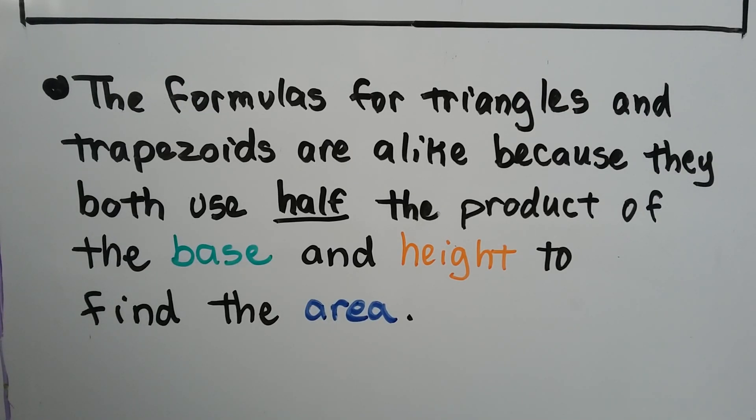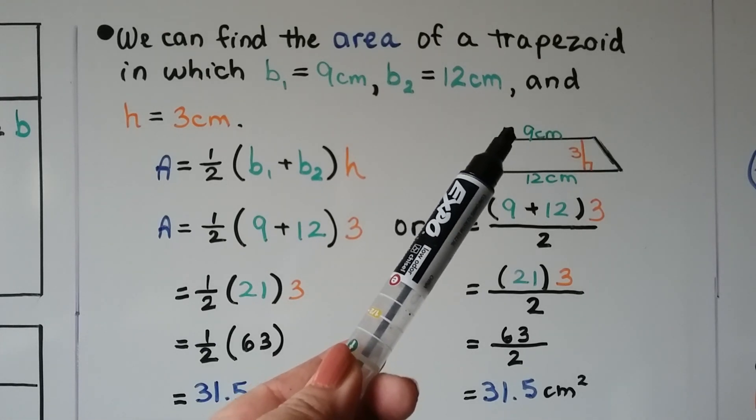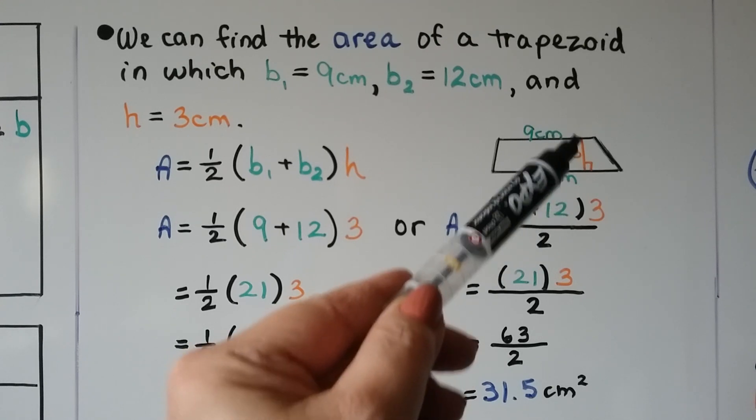The formulas for triangles and trapezoids are alike because they both use half the product of the base and height to find the area. We can find the area of a trapezoid in which base sub 1 is 9 centimeters and base sub 2 is 12 centimeters and it has a height of 3 centimeters.